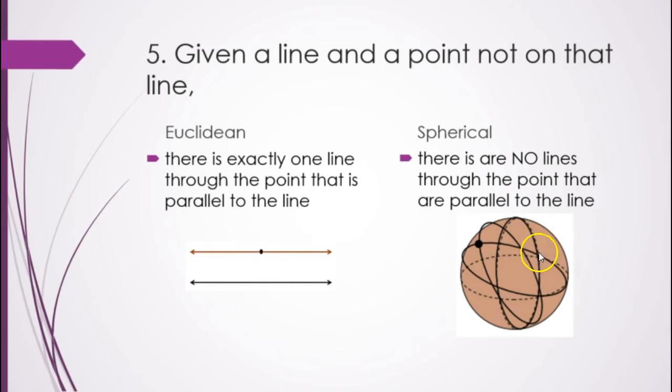However, if I try to do the same thing here, here's a line. It's this great circle. And this point over here, I could draw a couple of different great lines through this point, but none of them are going to be parallel to this line here because they're always going to intersect. So here, there's one line that goes through it. Here, there are no lines that are parallel to the first one.